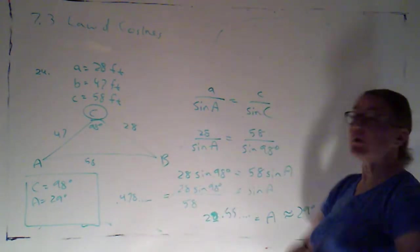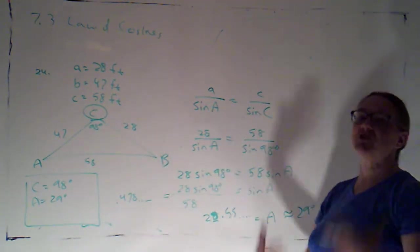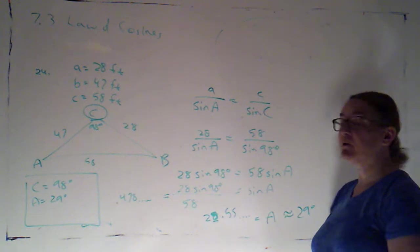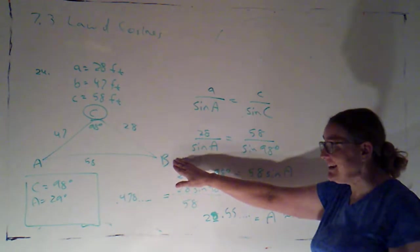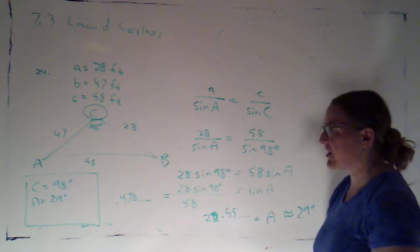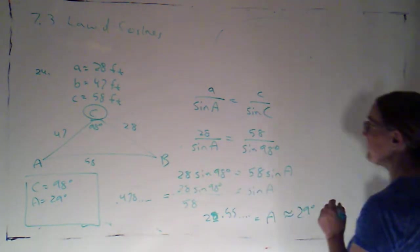Now once we've got that, we find the third one by just using the fact that the sum of the angles in the triangle is 180. Okay. So if you had chosen to find B instead, you'd now use the sum of the angles in the triangle to find A. Either of those would work.